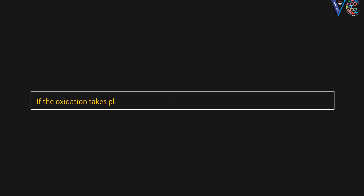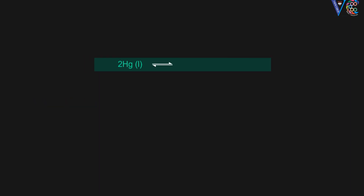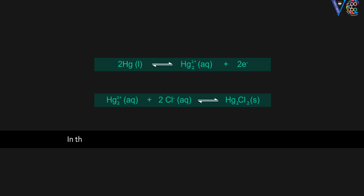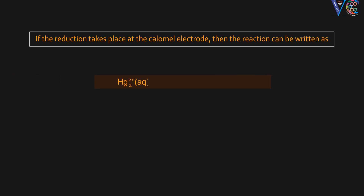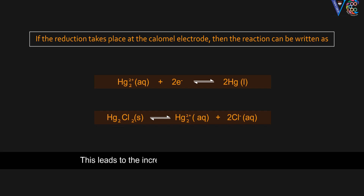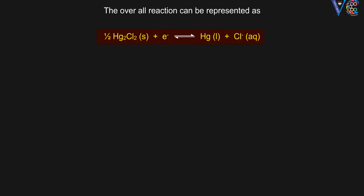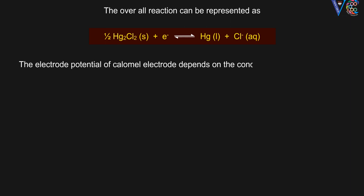If oxidation takes place at the calomel electrode, the following reactions take place, resulting in a decrease in the concentration of chloride ions. If reduction takes place at the calomel electrode, the reaction leads to an increase in the concentration of chloride ions. The overall reaction can be represented accordingly.